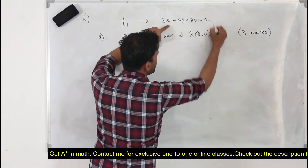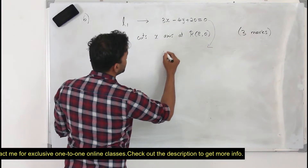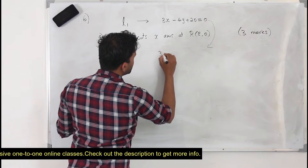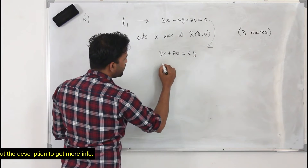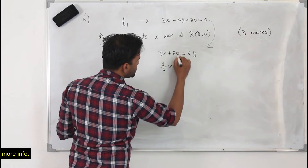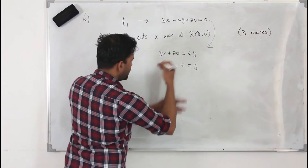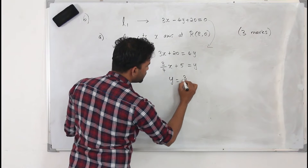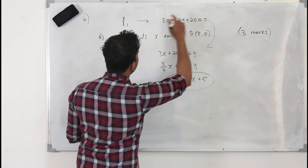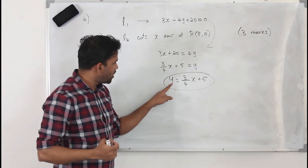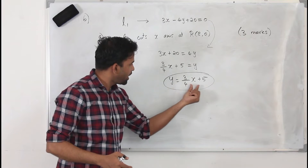You always need to write the equation in the form y equals mx plus c, which means changing the subject to y. When you bring 4y to the other side: 3x plus 20 equals 4y. Divide everything by 4: y equals 3/4 x plus 5. This is the equation of L1 in slope-intercept form.